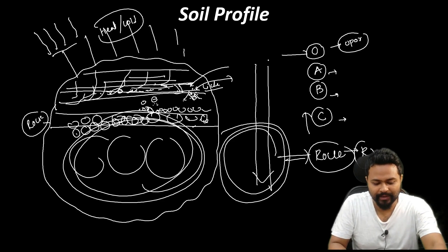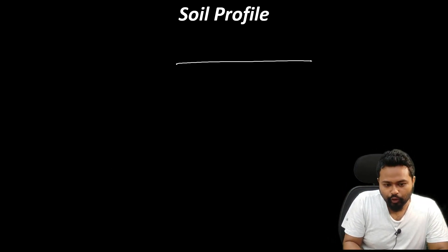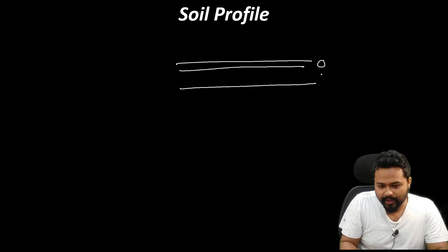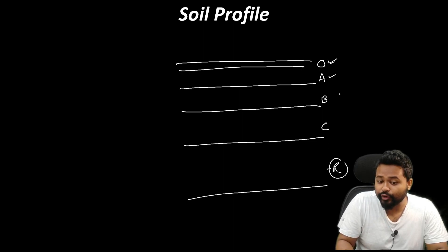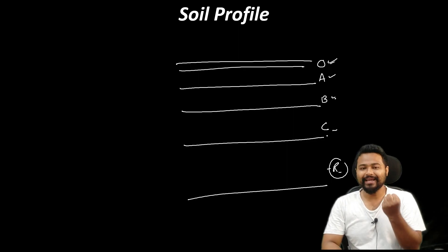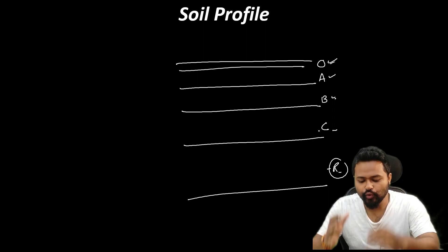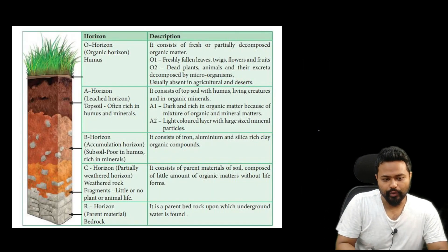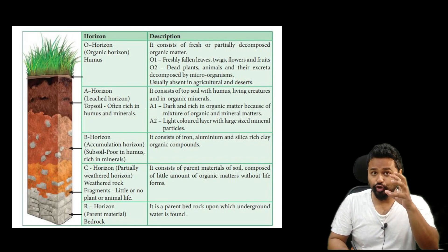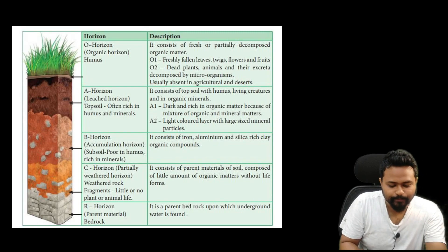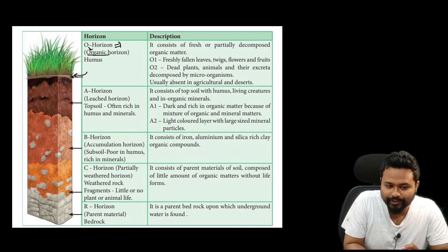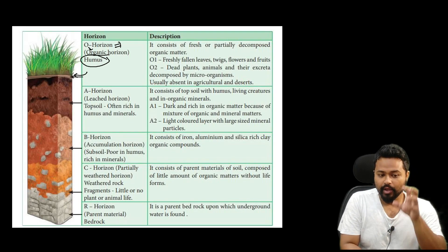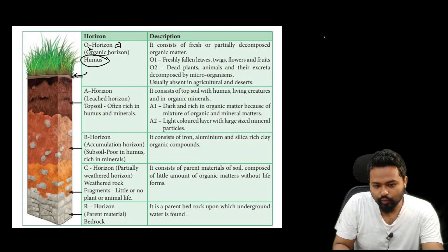So the soil profile — what do we have with the upper layer? The layers are: O, A, B, and R zone. Let's go into the depth with a proper diagram. The upper layer is B, which should be A.